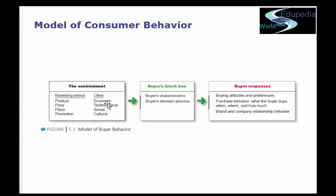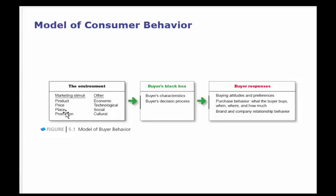Looking at the model of consumer behavior, you have the environment in which your business operates, the buyer's black box — which is very important — and buyer responses. In the environment, marketing stimuli include product, price, place, and promotion, plus economic, technological, social, and cultural factors. The buyer's black box covers buyer characteristics, decision process, buying attitudes and preferences, purchase behavior — what, when, where, and how much — and brand and company relationship behavior.